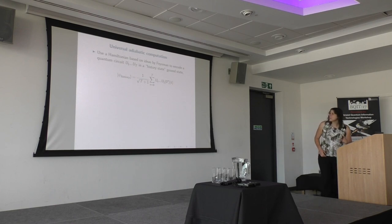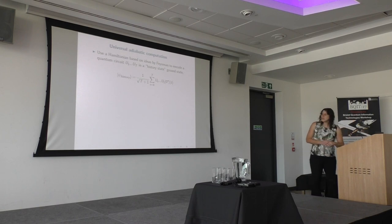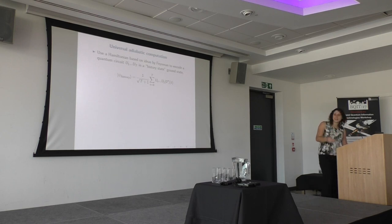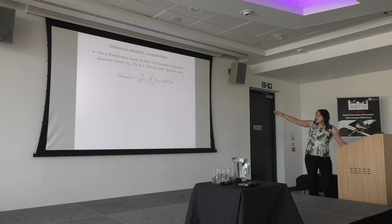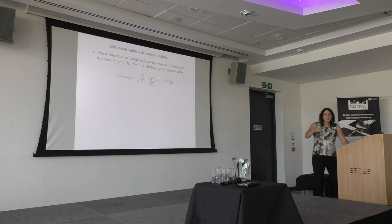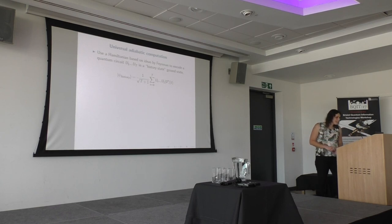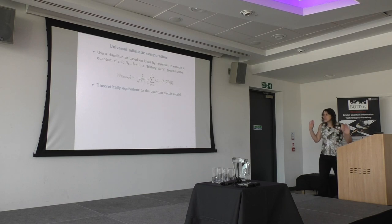Universal adiabatic computation is very elegant, based on Feynman's original proposal about quantum computers. You create a history state of a quantum circuit — a superposition over the time steps your circuit would take. The register T records which step of the computation you're on. You can write down the local Hamiltonian that enforces this ground state and prove the spectral gap makes this all efficient. This is theoretically equivalent to the quantum circuit model. One reason people are interested in adiabatic computing is that ground states or very low temperature thermal states are inherently more stable — you just need to keep your system at a very cold temperature.